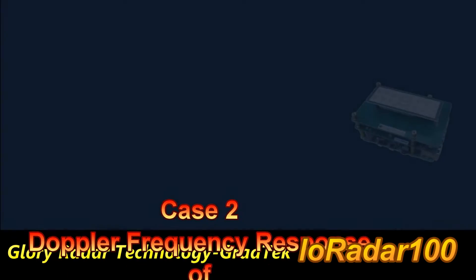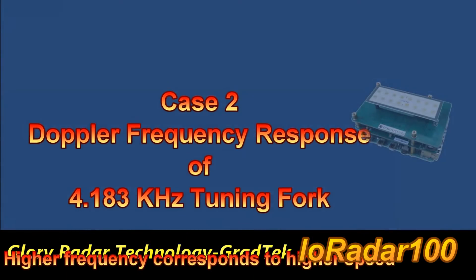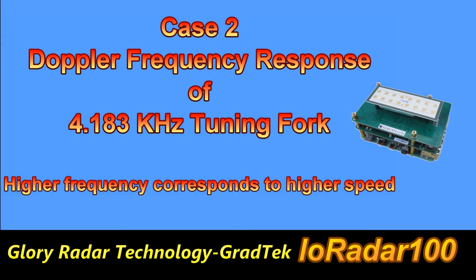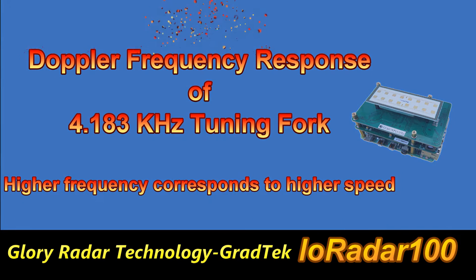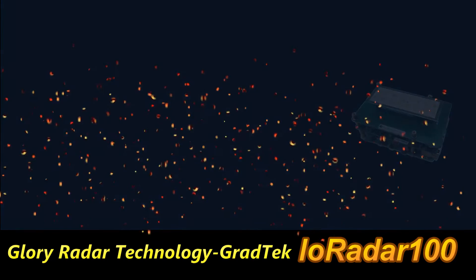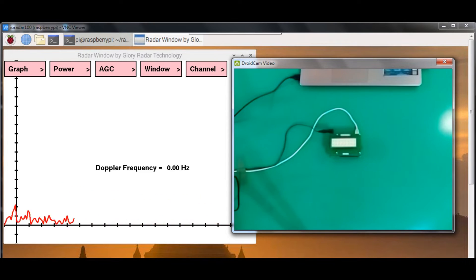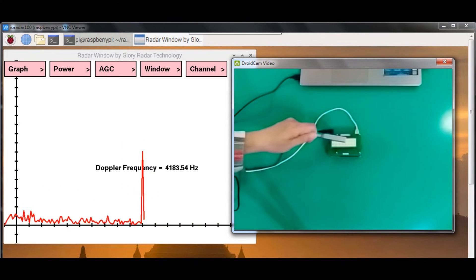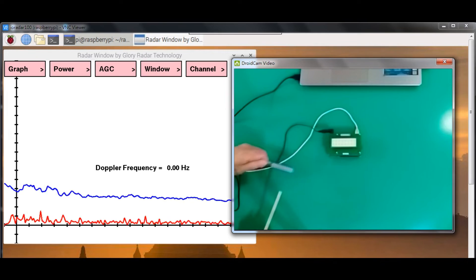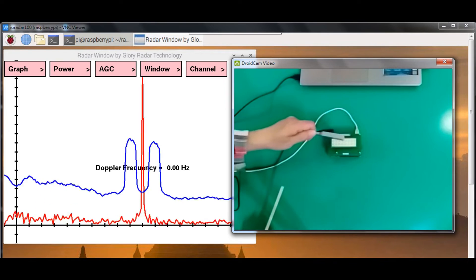Case 2: Doppler frequency responsive 4.183 kHz tuning fork. Higher frequency corresponds to higher speed.